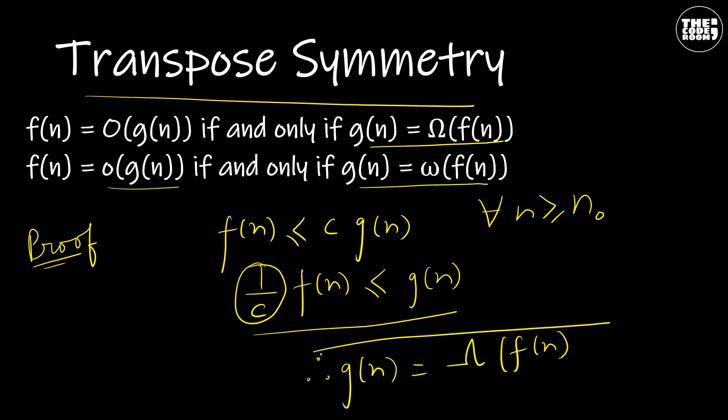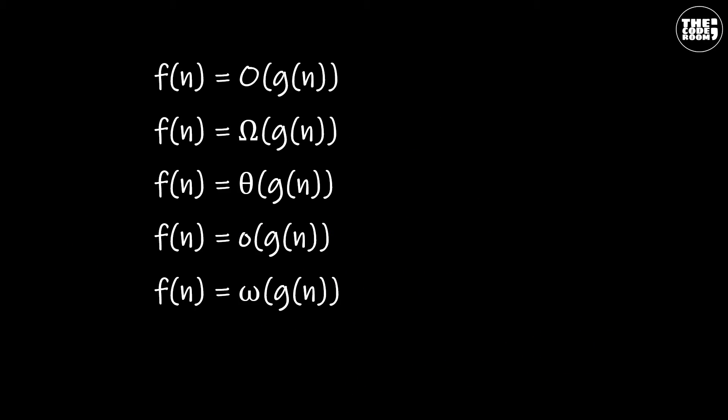Hence, our property is proved. Because these properties hold for asymptotic notations, we can draw an analogy between the asymptotic comparison of two functions f and g and the comparison of two real numbers a and b. So, f(n) is the Big O of g(n) is like a is less than or equal to b.